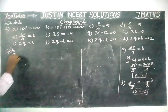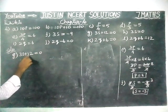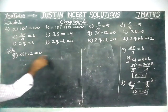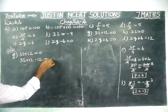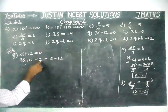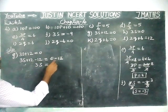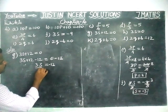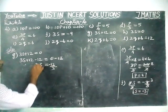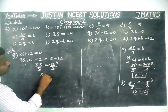We are going to solve option G: 3S plus 12 is equal to 0. To cancel this 12, we are going to subtract 12 on both sides. 3S plus 12 minus 12 is equal to 0 minus 12. Plus 12 minus 12 gets cancelled. So, 3S is equal to 0 minus 12 equal to minus 12. Now we are going to divide 3 on both sides. 3, 3 gets cancelled. 1 three is 3, 4 threes are 12, and minus symbol is there. So, S is equal to minus 4.